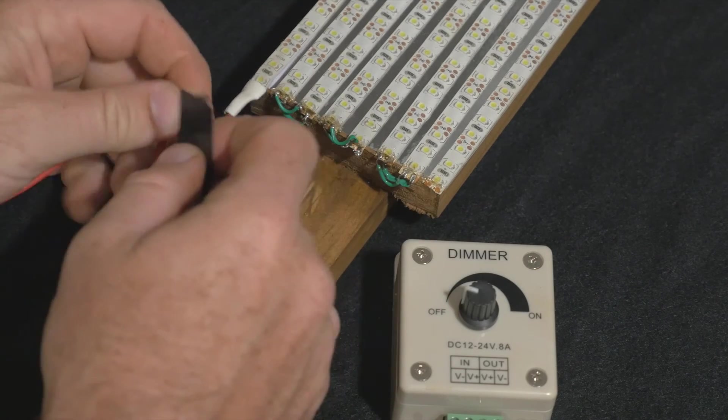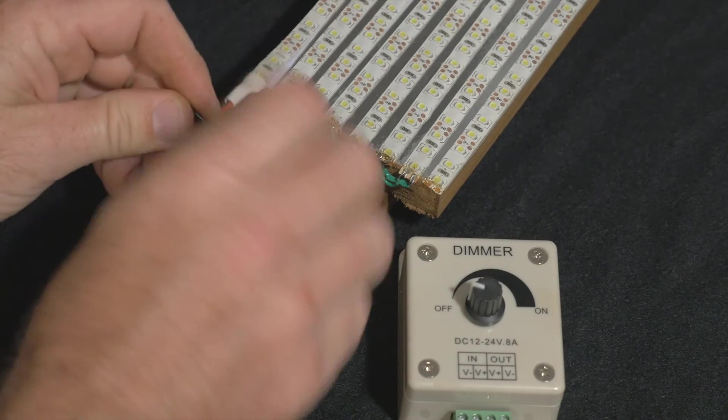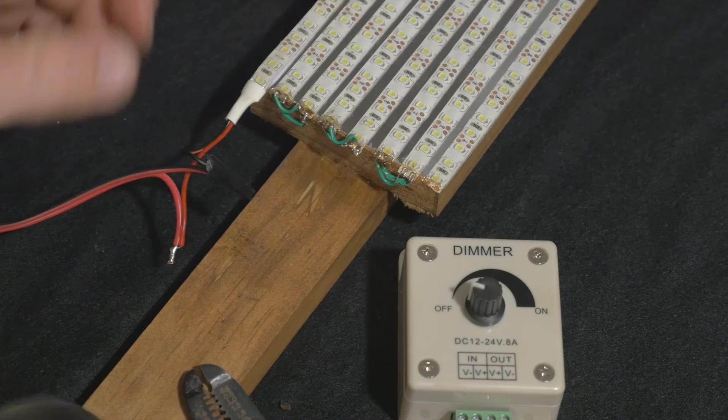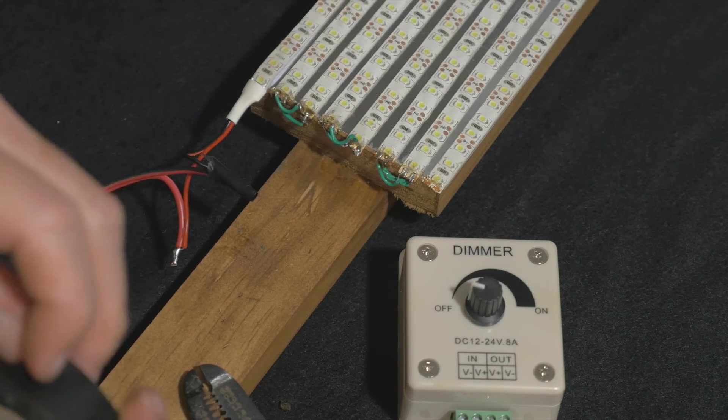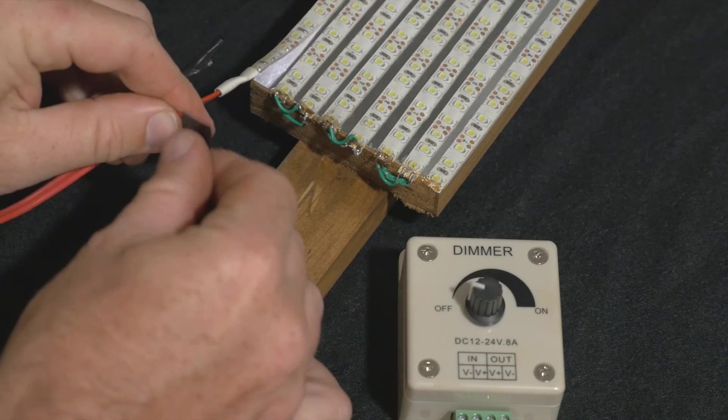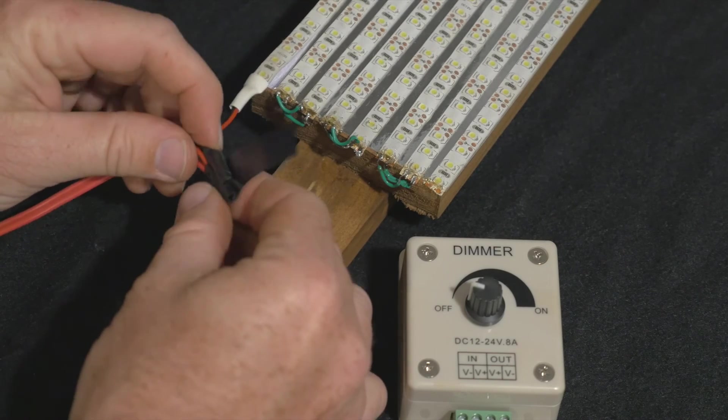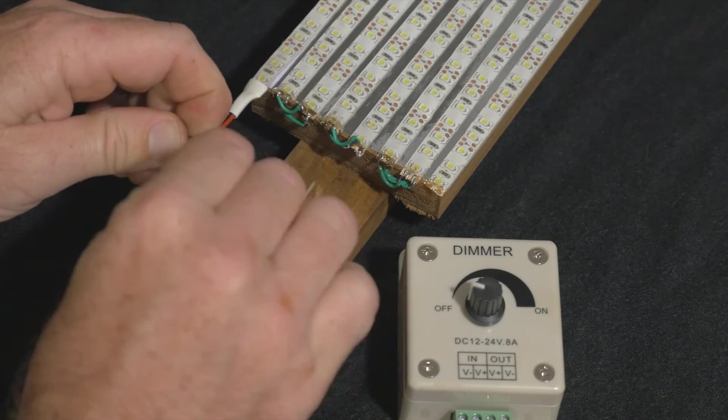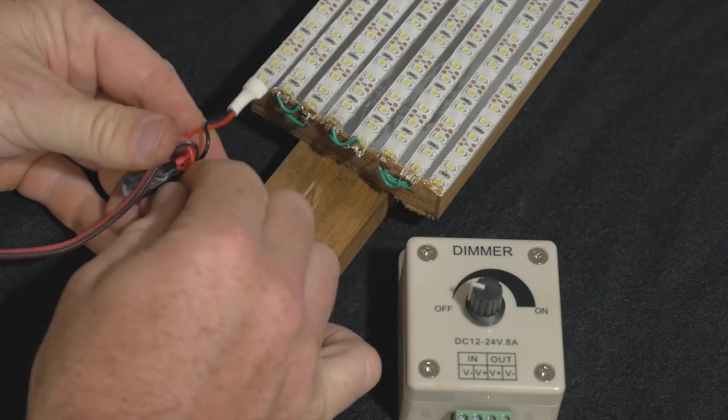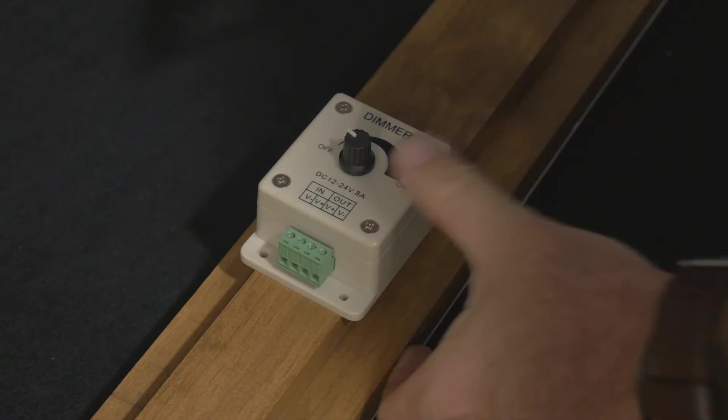Once I've done that I'm going to get some electrician's tape and I'm just going to cover each connection separately and then I'll join them both together. This just stops it from shorting out. You don't want two wires, positive and negative, touching each other, because what will happen is it will reduce the amount of voltage going through the wires into the LEDs and you'll lose the amount of voltage going through the LEDs, which will then obviously not be ideal. So I'm just going to tidy that up like so.